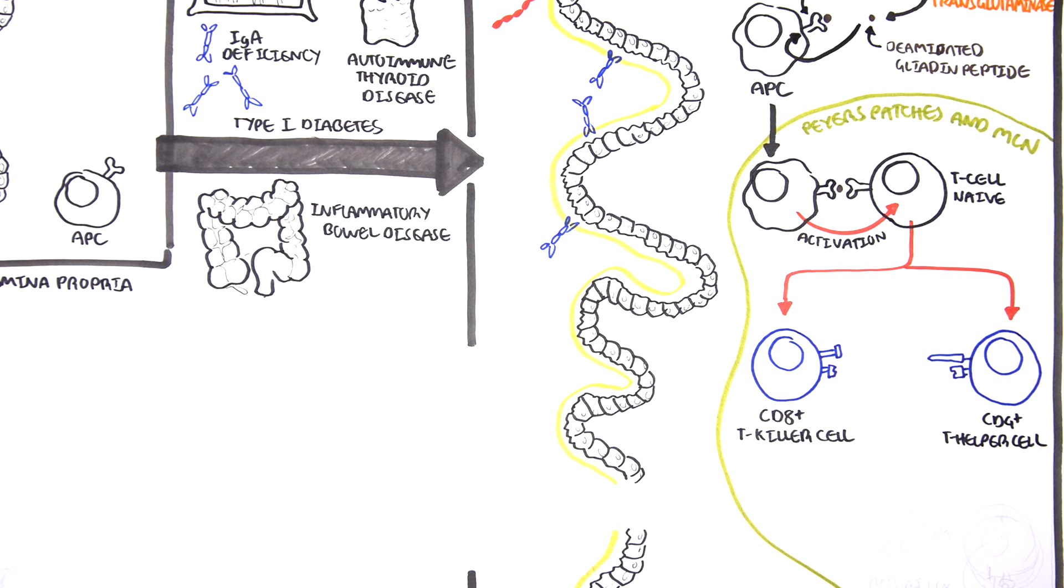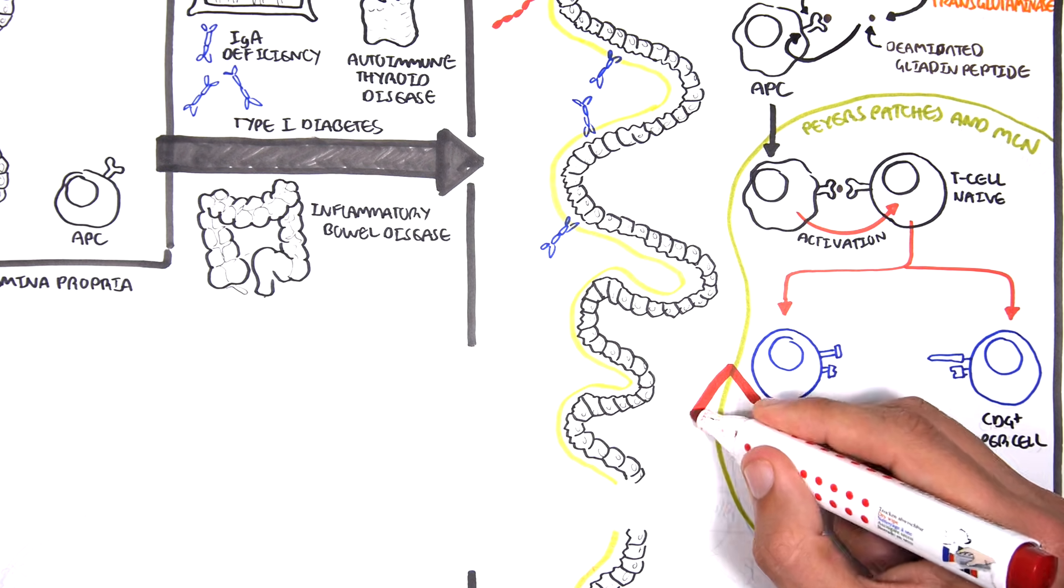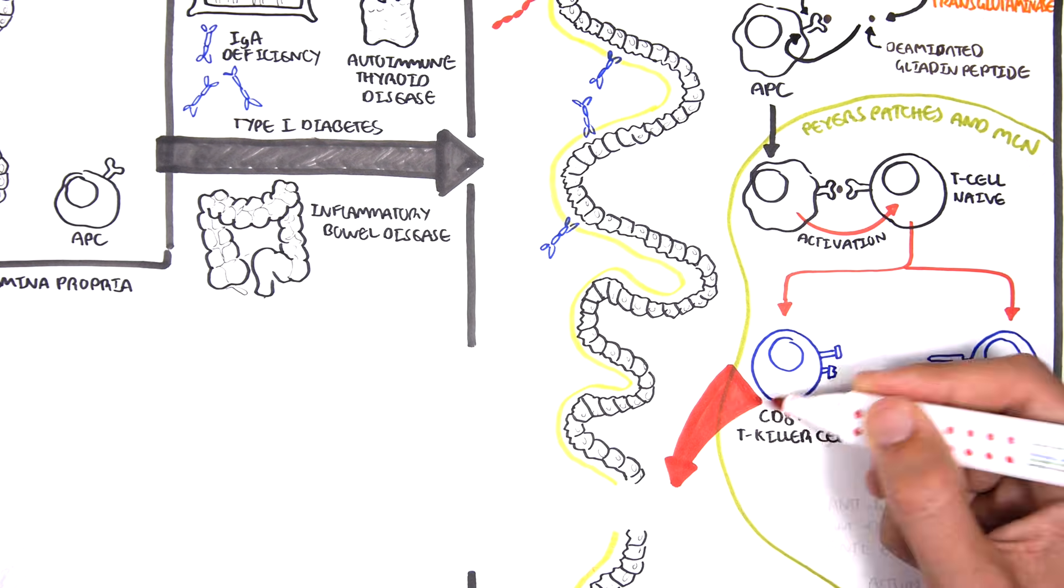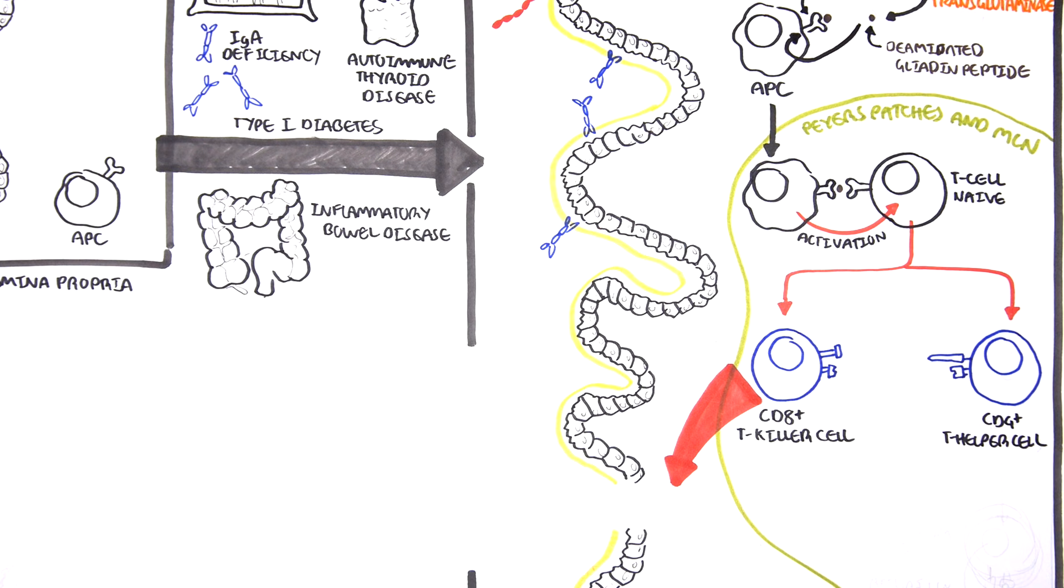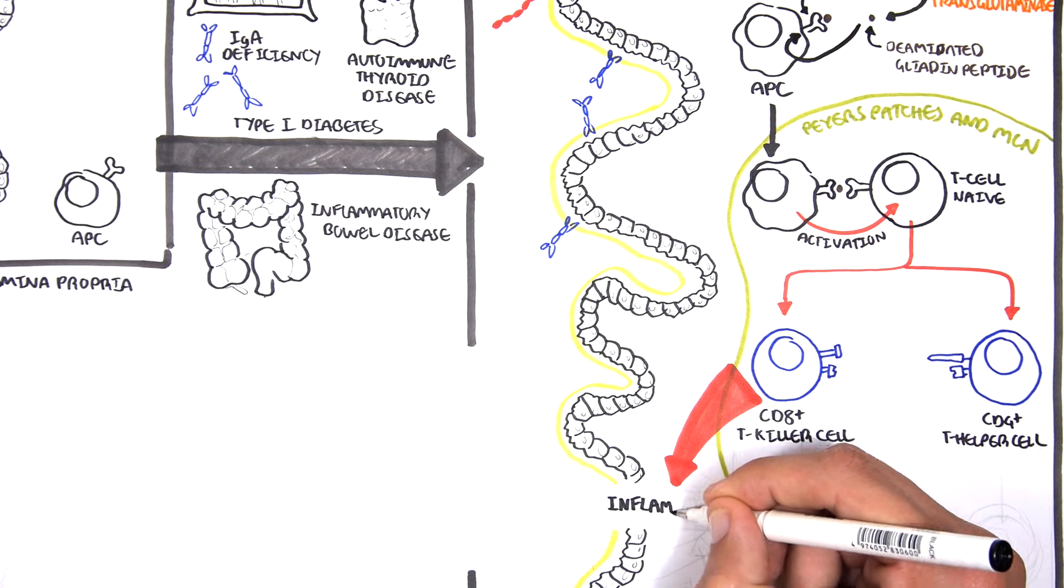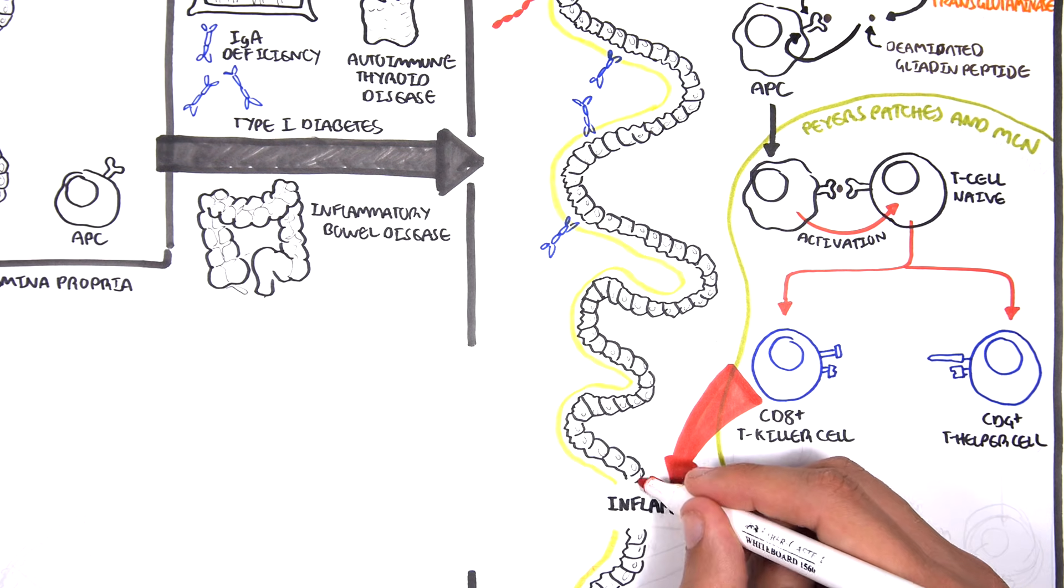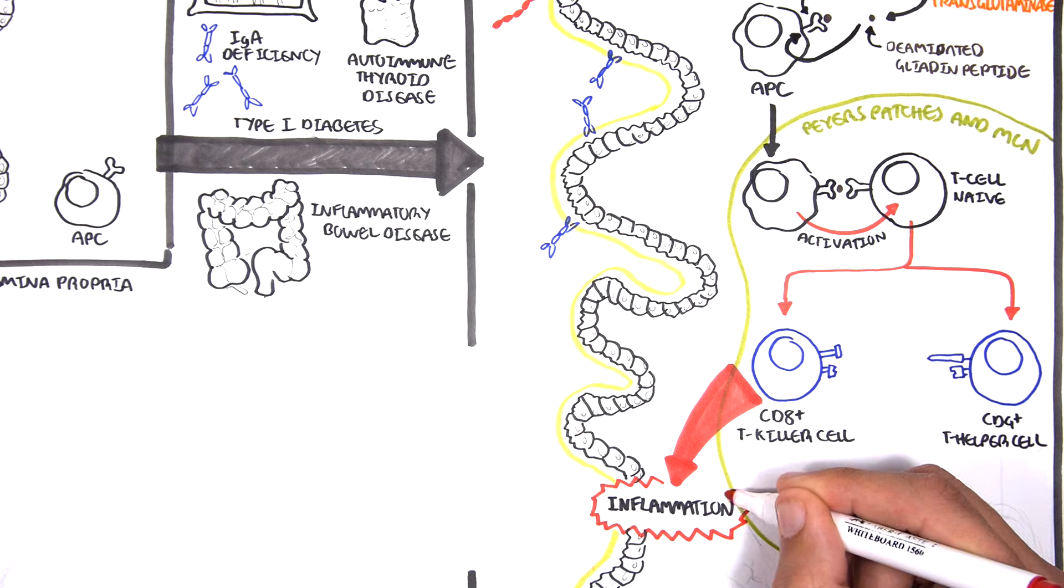The CD8 T killer cell, as the name suggests, kills things. They are aggressive and will promote inflammation when in contact with gliadin. So, every time we eat gluten, which contains gliadin, inflammation will occur.